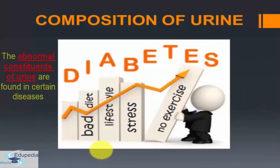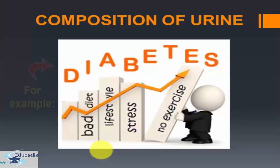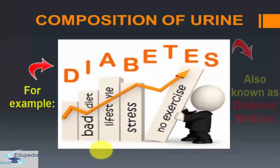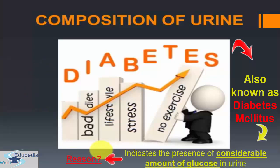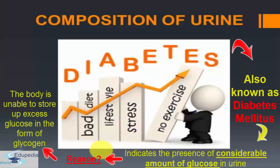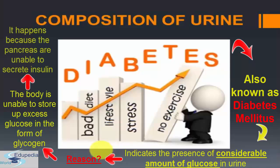Abnormal constituents of urine are found in certain diseases. For example, in sugar diabetes, which is also known as diabetes mellitus, the urine contains a considerable amount of glucose. This is because the body is unable to store up excess glucose in the form of glycogen. This may be due to the inability of the pancreas to secrete insulin.